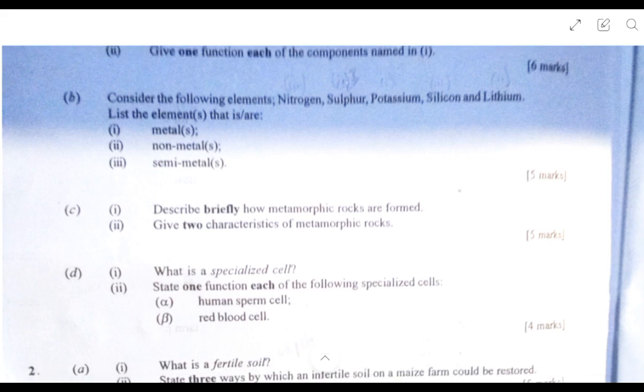B has to do with chemical elements and it's one of the topics you should give attention to. Consider the following elements: nitrogen, sulfur, potassium, silicon, and lithium. Which one is a metal? The metals are potassium and lithium.